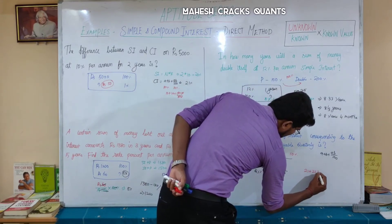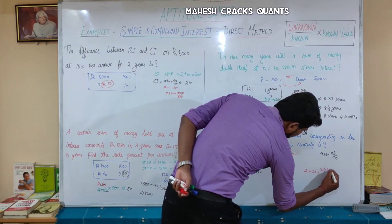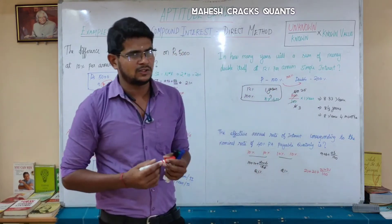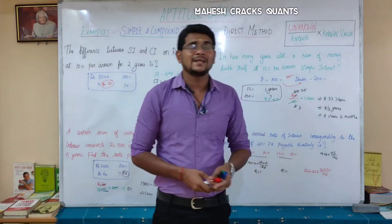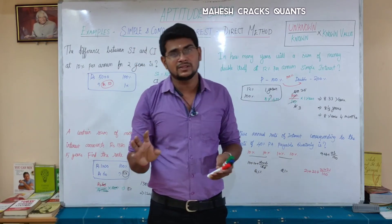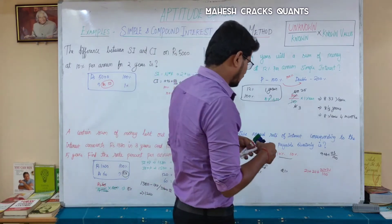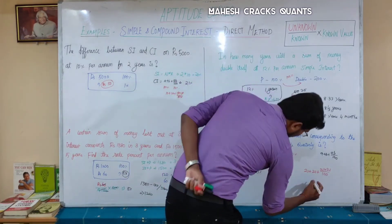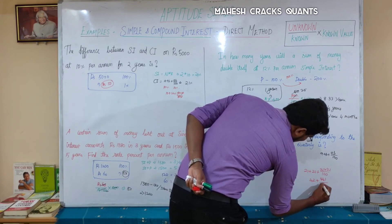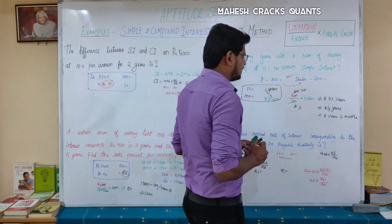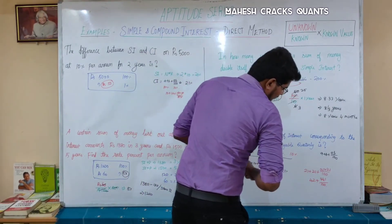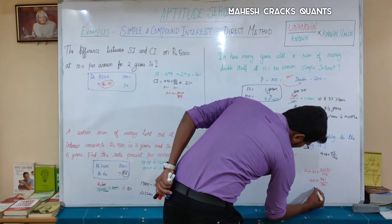For the final two quarters: 21 plus 21 plus (21 squared divided by 100). 21 plus 21 is 42, and 21 squared is 441, so 441 divided by 100 is 4.41. Therefore the total is 42 plus 4.41 equals 46.41%.